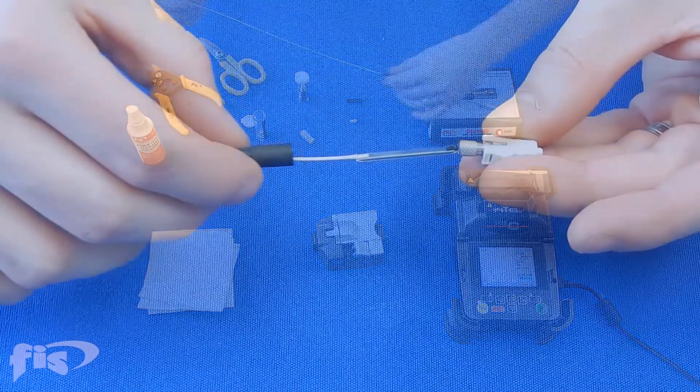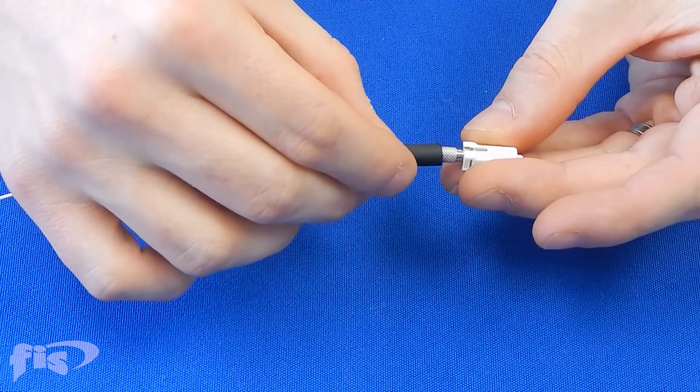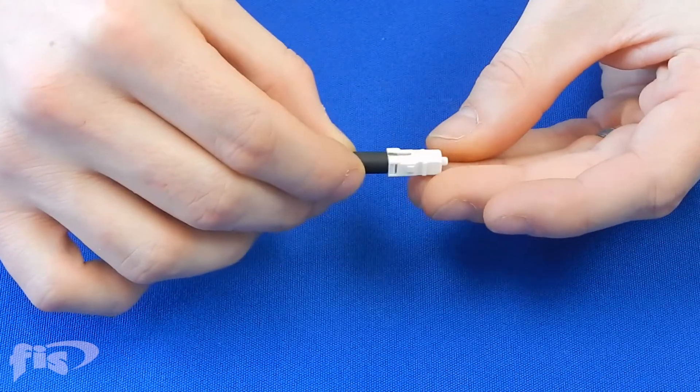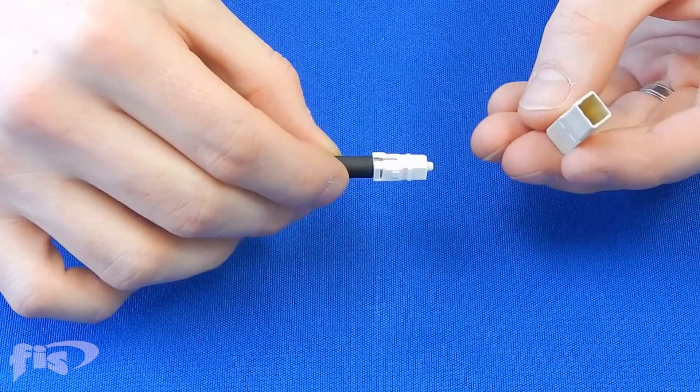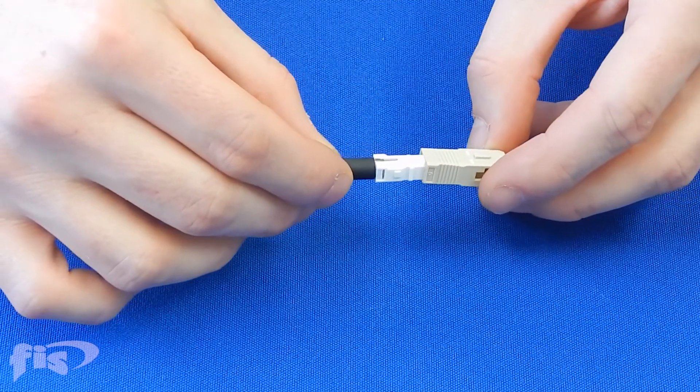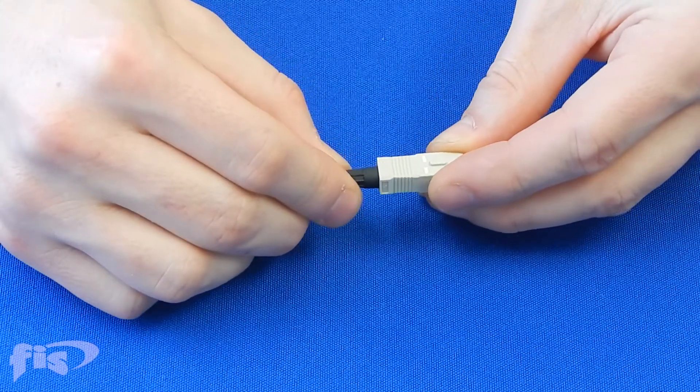Slide the 900 micron boot flush up to the back of the connector. For SC style connectors, snap on the outer housing, making sure the keyway is on top when installing.